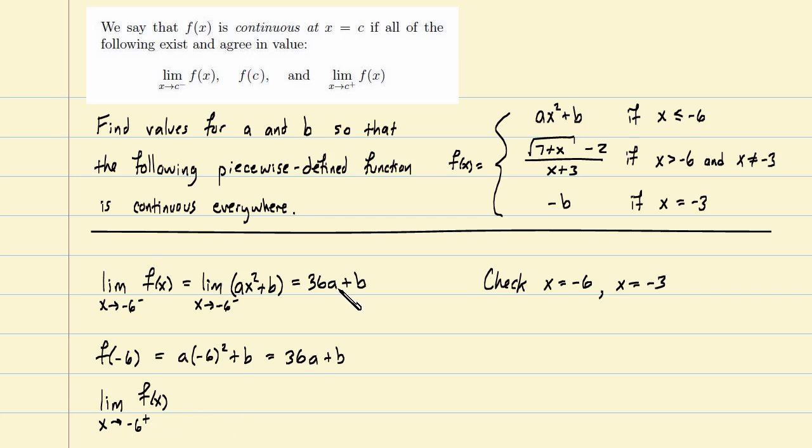If we're approaching negative 6 from the right, which piece applies? Well, if we're coming in from the right-hand side, we're slightly larger than negative 6, and so this piece would apply right here. So let's go ahead and replace f of x with its equivalent expression for these x values. Now how do we evaluate this limit? Well, notice we have a limit of a quotient here. It would be great if I could rewrite this as a quotient of limits. Of course, I can only do that if the limiting value of the denominator is non-zero as x approaches negative 6 from the right. But notice, of course, that's the case.